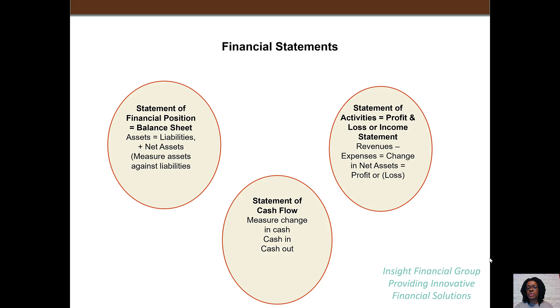The profit and loss statement — also known as the statement of activities in the nonprofit world — is your revenue minus your expenses. The statement of cash flow is simply measuring the change in cash: cash in and cash out.